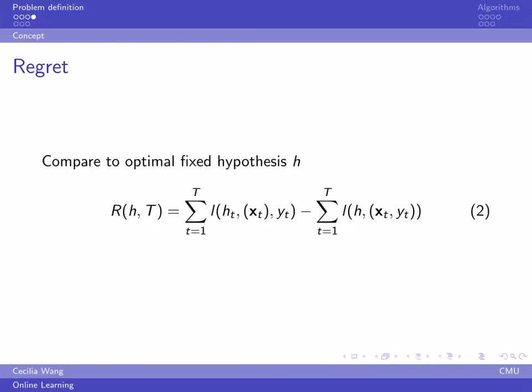However, an adversary can always make the cumulative loss of our online learning algorithm arbitrarily large. He can just look at our prediction and give an opposite answer. So we restate our objective as minimize the regret.